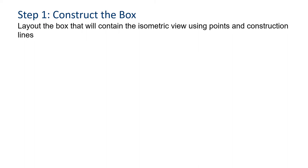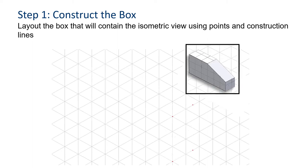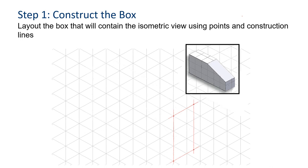So here we go. Step one, construct a box. Lay out the box that will contain the isometric view using points and construction lines. Remember, use those construction lines. So we're visualizing a box that looks something like this. See, that proportion's a little off because I'm not using a ruler. Okay, so we're drawing the box.